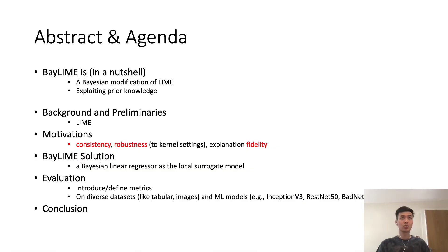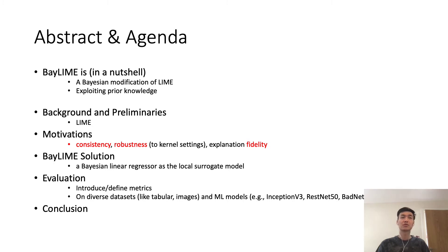So what is BEI LIME? In general, BEI LIME is a biasing modification of LIME, and LIME is known to be a very popular and successful XAI method. BEI LIME can utilize prior knowledge to improve some desirable properties of LIME.